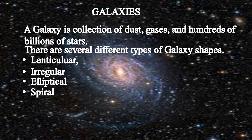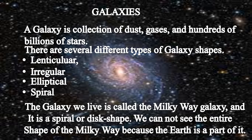Lenticular means it is convex on both sides, also called a bi-convex shape. The galaxy we live in is called the Milky Way galaxy and it is a spiral or disk shape. But we cannot see the entire shape of our Milky Way galaxy because Earth is part of it. To observe that, you would have to travel at the speed of light beyond our solar system.